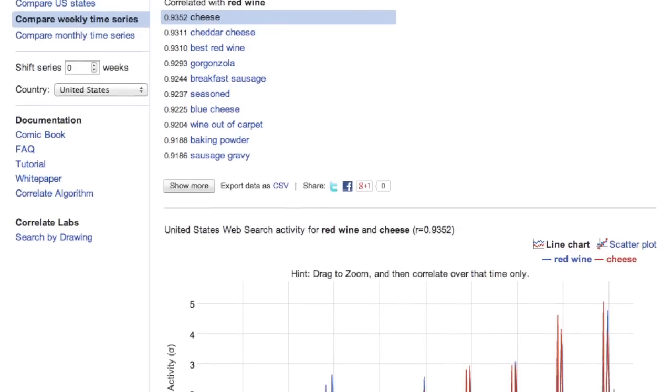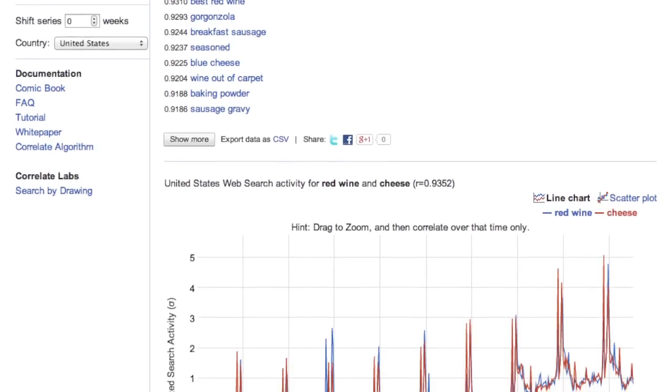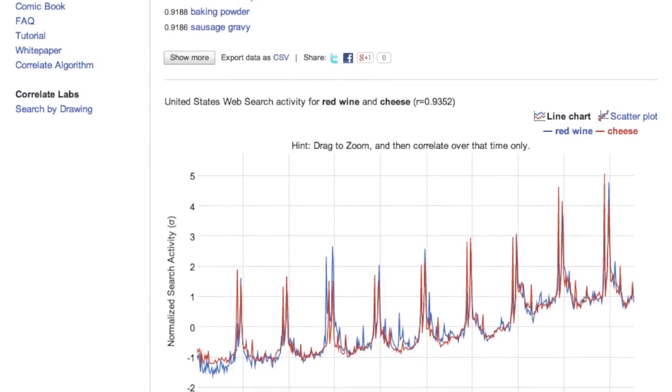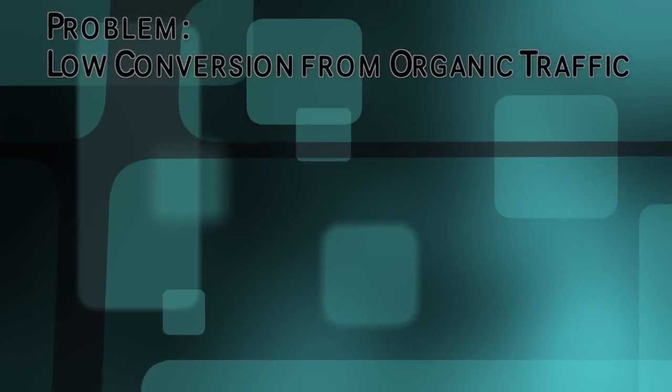Google Correlate is an excellent tool for coming up with out-of-the-box keyword ideas. It basically helps you find other keywords which follow the same search patterns as your primary keyword. For example, if I'm a food blogger and I talk about red wine, when you enter 'red wine' as a keyword in Google Correlate, you find out that 'cheese' is also a keyword which follows the same search patterns. So I can use this tool to find other topics on which I can create blog posts and cater to the same audience.